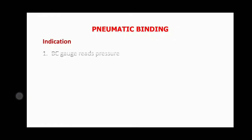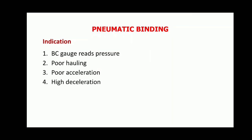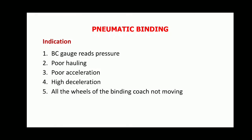Indications of brake binding are: BC gauge reads pressure, poor hauling, poor acceleration, and high deceleration. All the wheels of the binding coach are not moving.